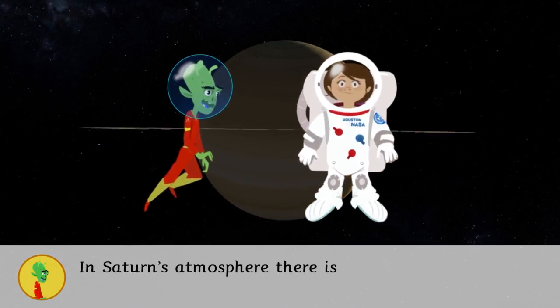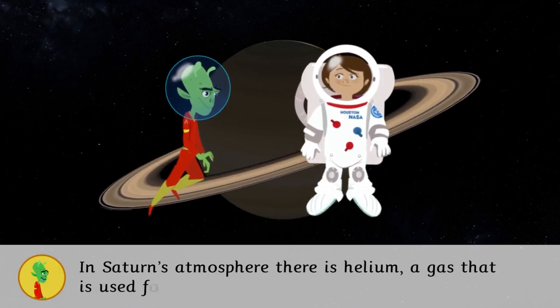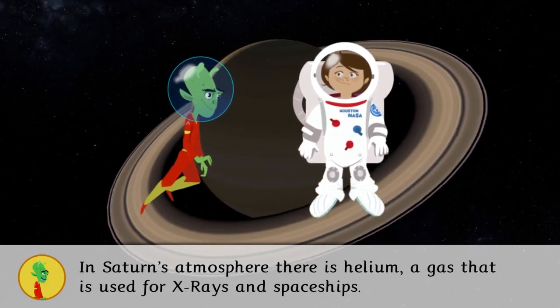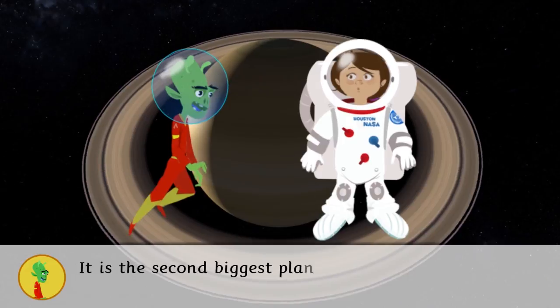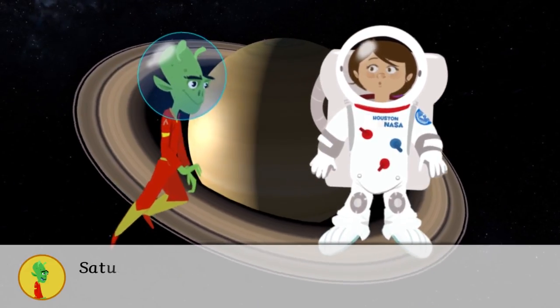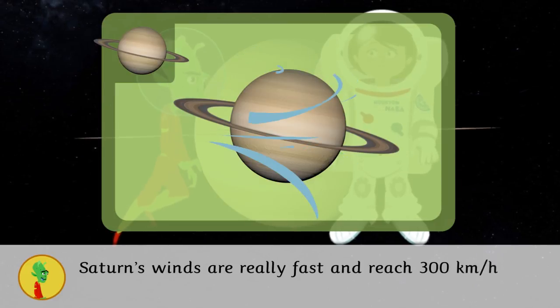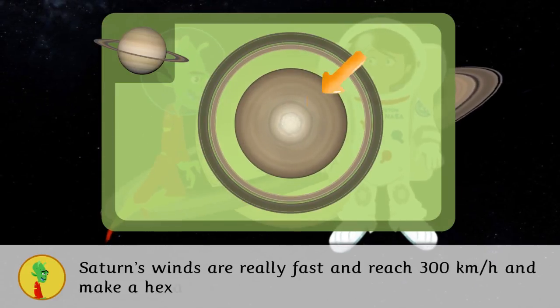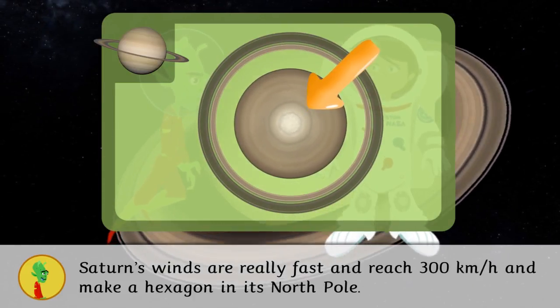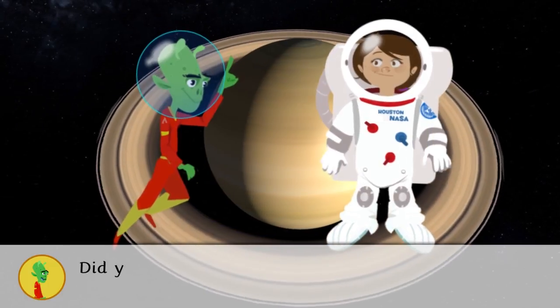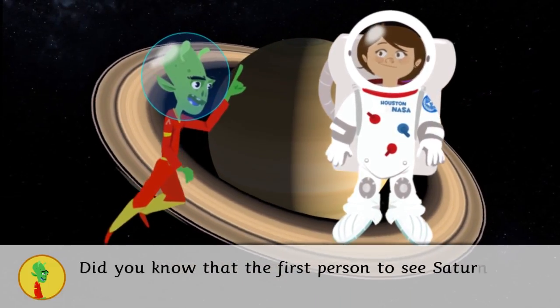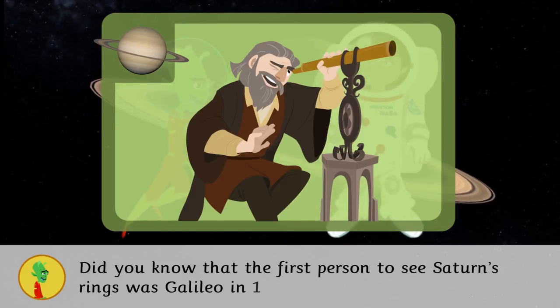In Saturn's atmosphere, there is helium, a gas that is used for X-rays and spaceships. It is the second biggest planet after Jupiter. Saturn's winds are really fast and reach 300 km per hour and make a hexagon in its north pole. Did you know that the first person to see Saturn's rings was Galileo in 1610?